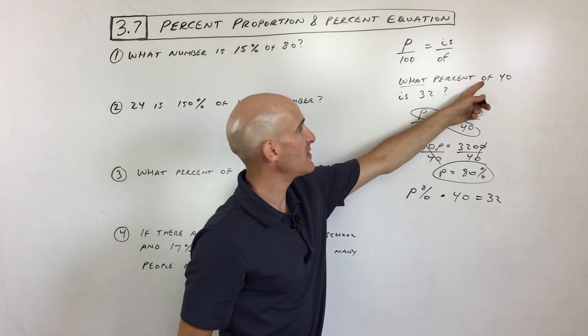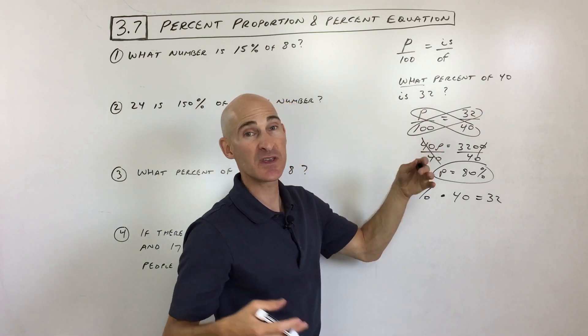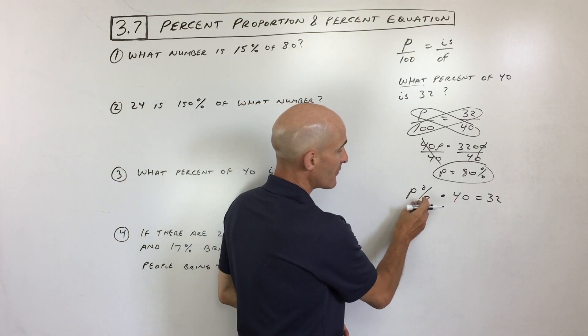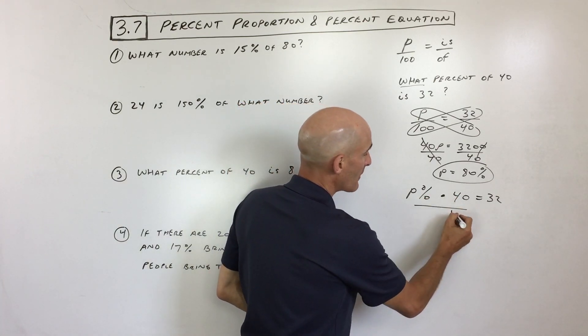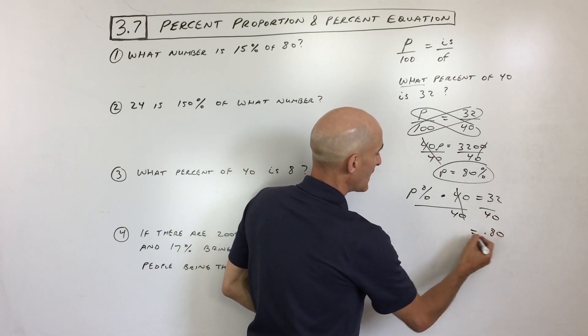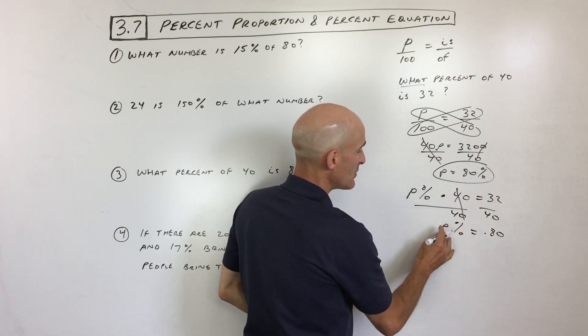Pretty neat, right? So of means times, is means equals. What means we don't know, so we're going to make that a variable. Now, remember, just like we were solving equations before, we want to get the variable by itself. What's the opposite of multiplying by 40, dividing by 40? This comes out to 0.80, but this is P percent.